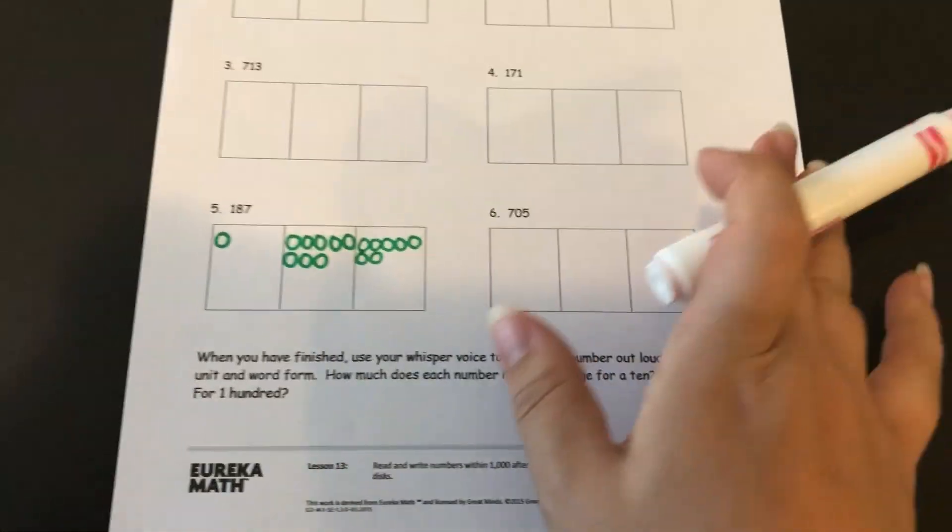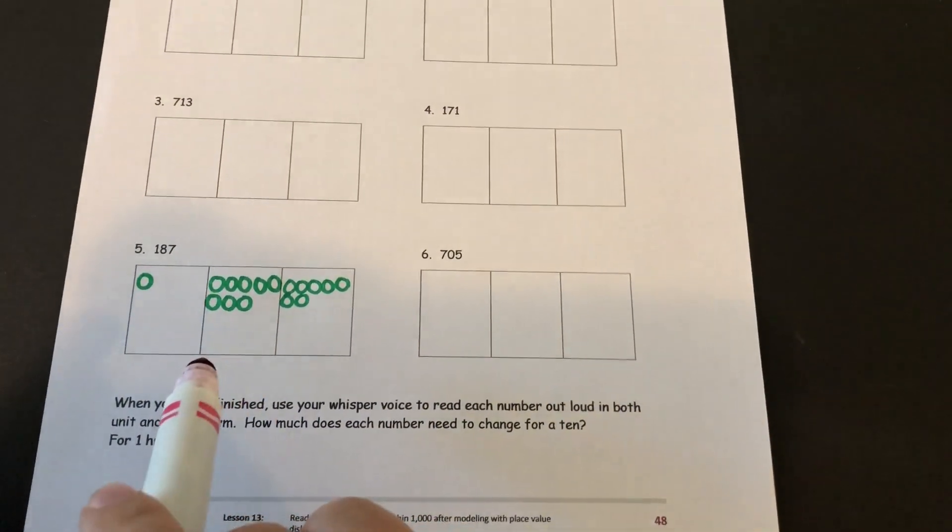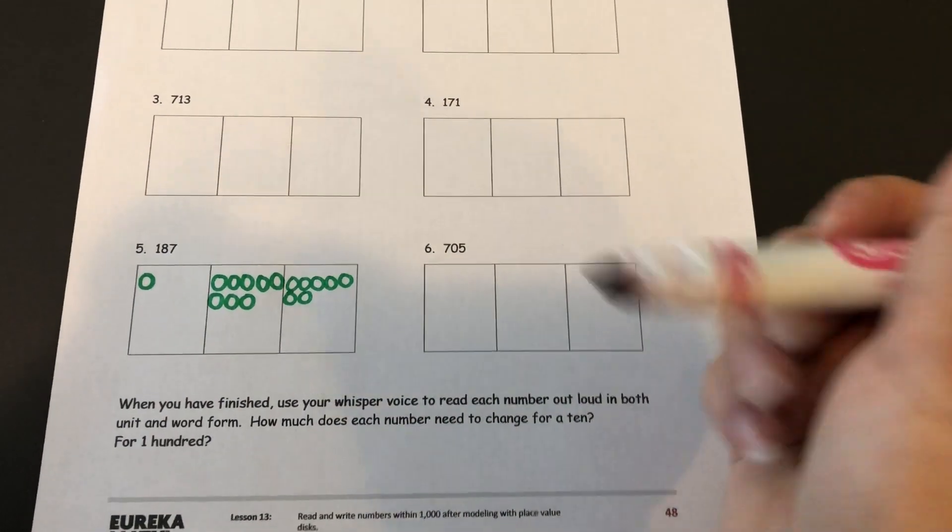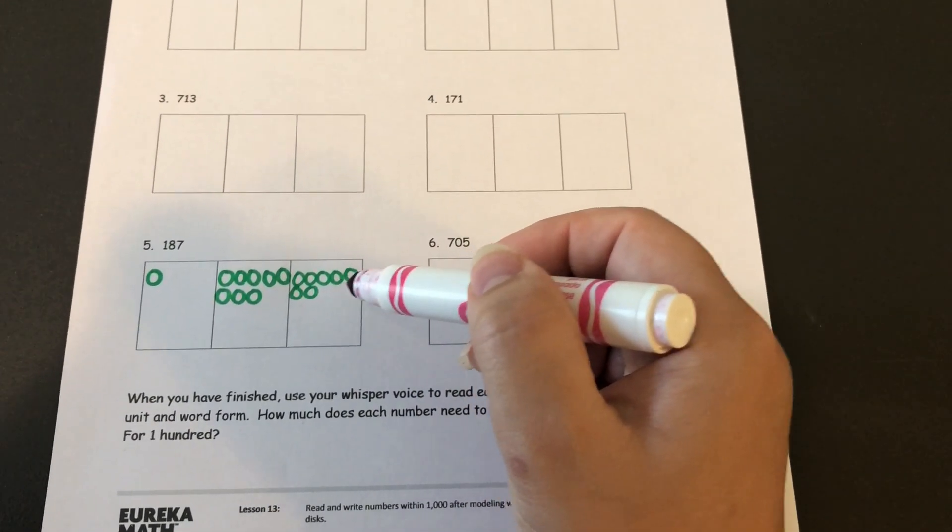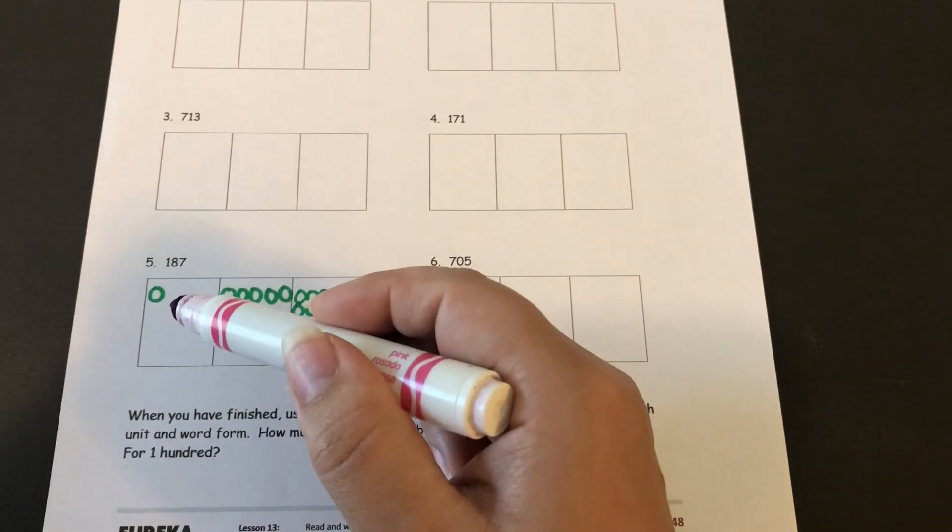So that's what you're going to do for all of these problems. You're just going to draw them out with your place value disks, say it in word form, say it in unit form, and then look at them and see how many ones you would need to add to make the next 10 and how many tens you would need to add to make the next 100.